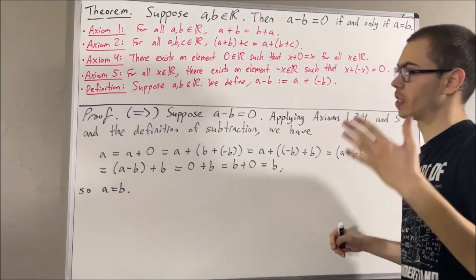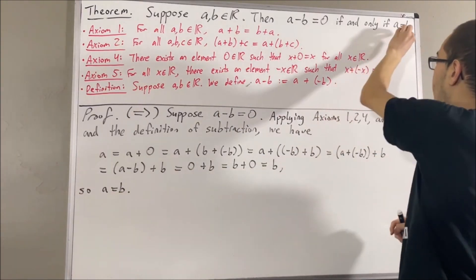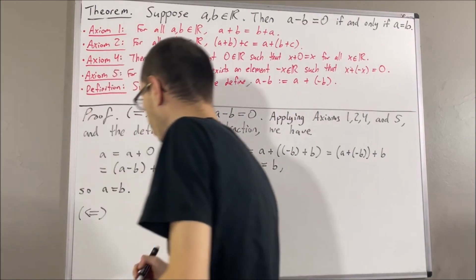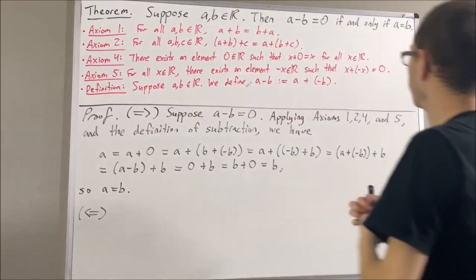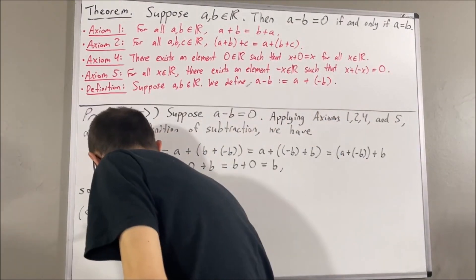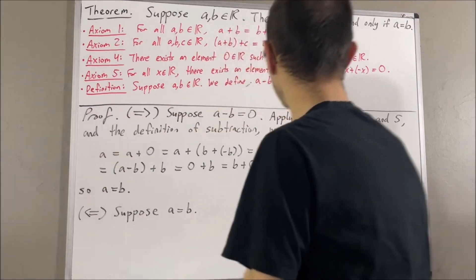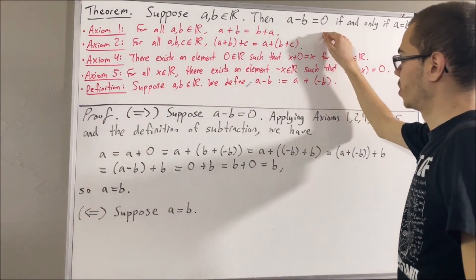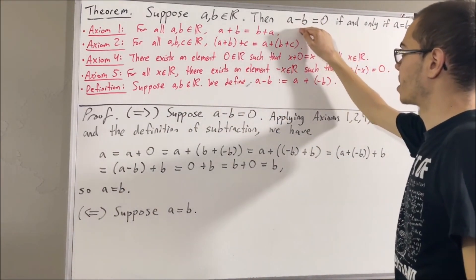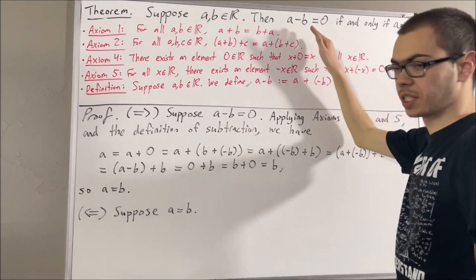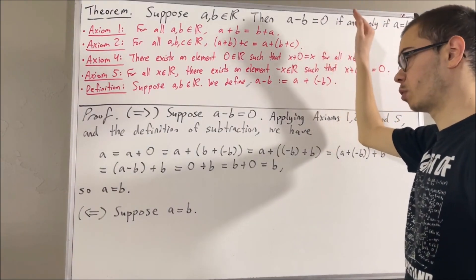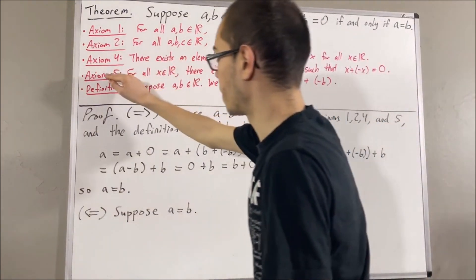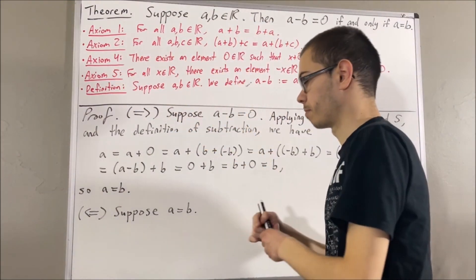Now let's prove the other direction. Let's prove if a is equal to b, then a minus b is equal to zero. To prove that, suppose a is equal to b. From here, we want to show that a minus b is equal to zero, and we are going to establish that through a chain of equalities using axiom 5 and the definition of subtraction.